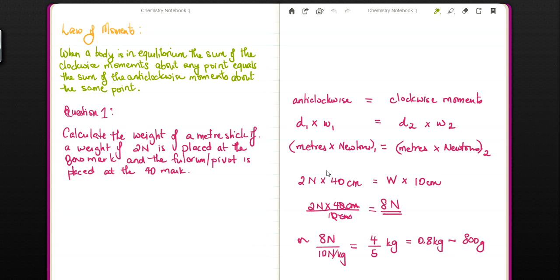So when a body is in equilibrium, the sum of the clockwise moments about any point equals the sum of the anticlockwise moments about the same point. They're just saying what number you get on the left side must equal to what you get on the right side of the equation. That's all they're saying.